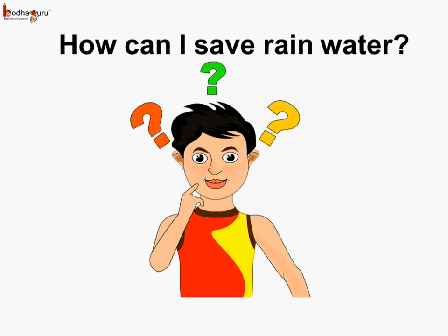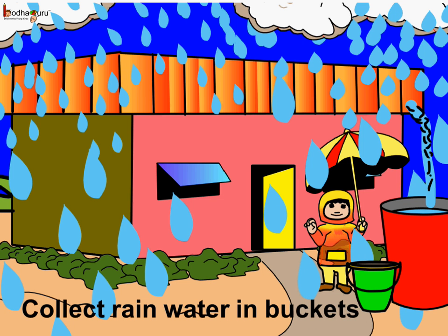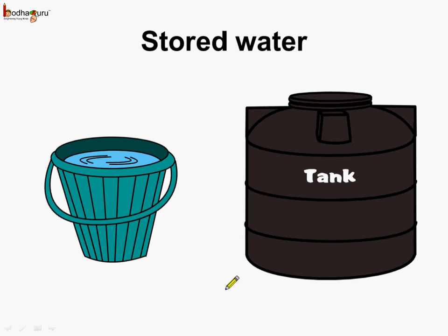Rain water is very useful for us and also precious. So can we save rain water? Yes, children can also help in saving rain water. You can collect rain water in buckets, barrels etc. Then this stored water in buckets, tanks etc. can be used in various ways.